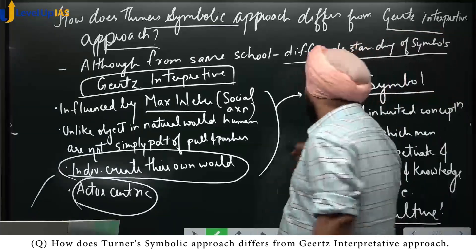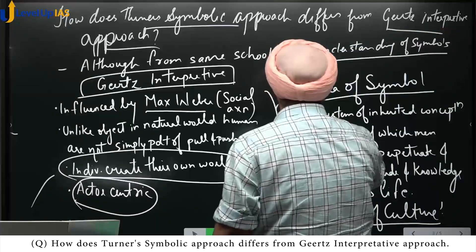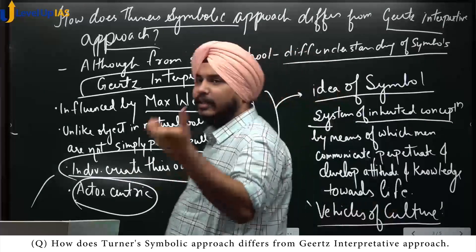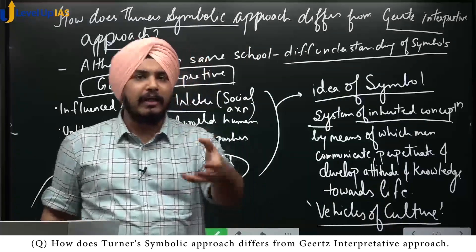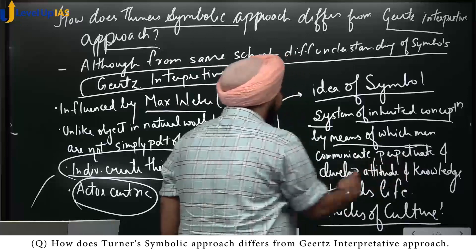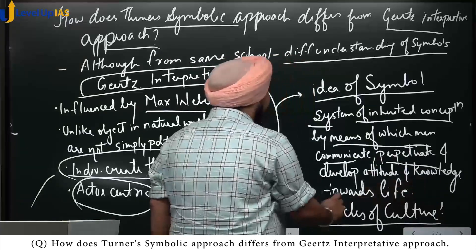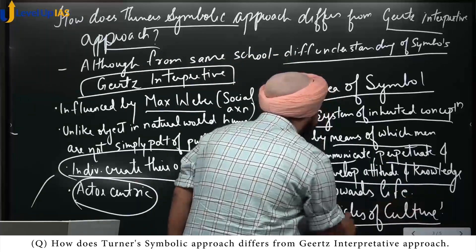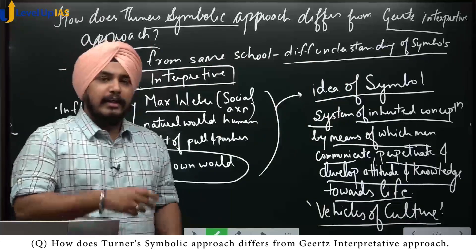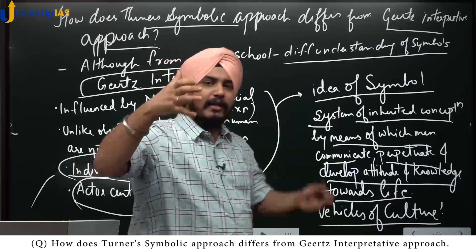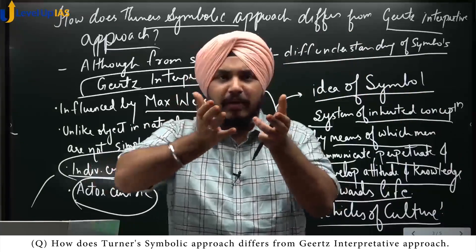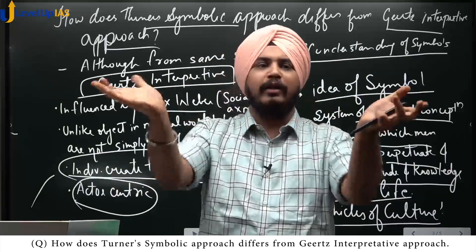Geertz says that a symbol is a system of inherited conceptions by means of which men communicate, perpetuate, and develop attitudes and knowledge towards life. It is the symbol that creates the mind map, and it is through symbols that we view the outer world.